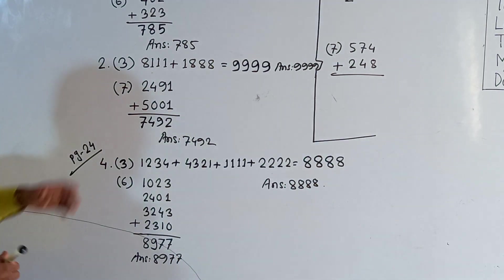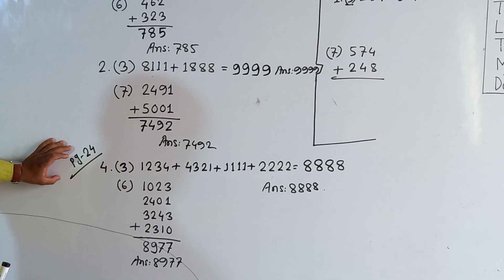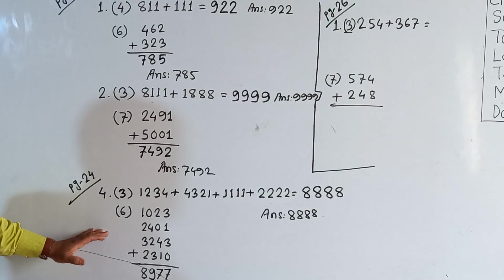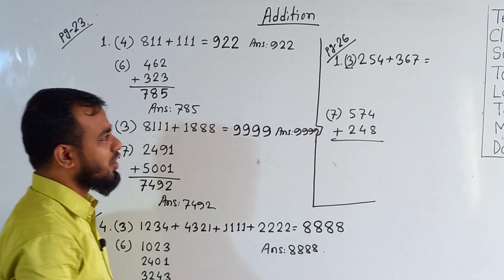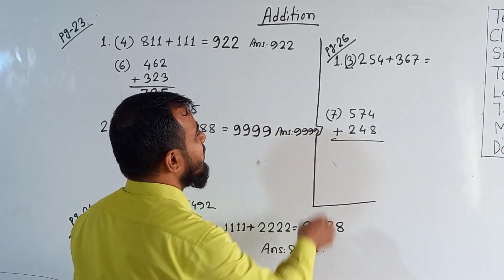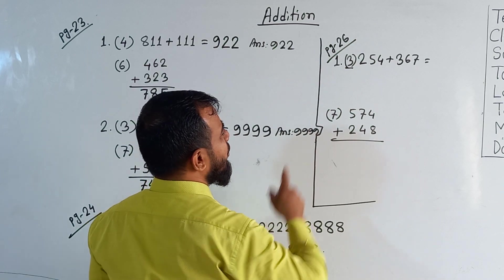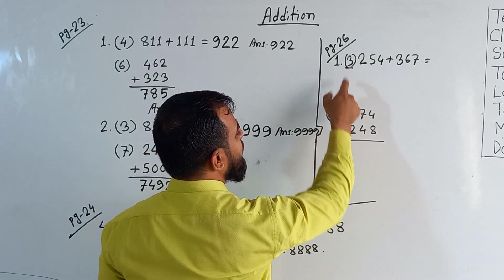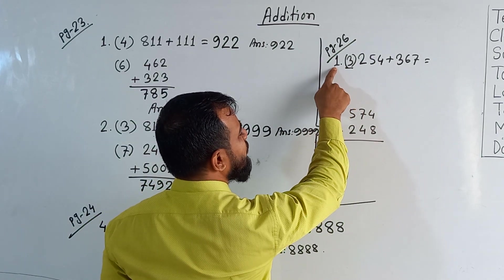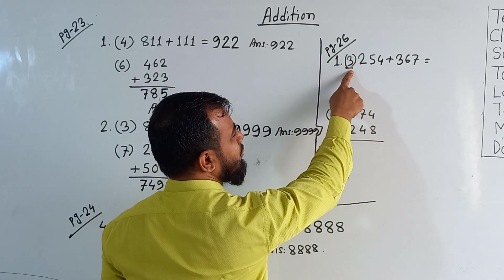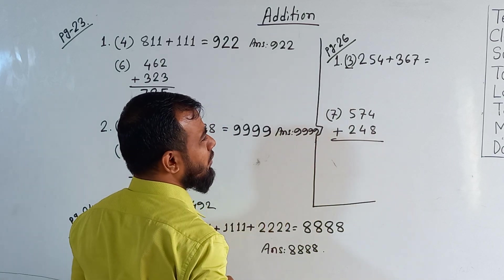We have done page number 23 and 24 — these are problems without carrying. Now we are going to solve with carrying. This is page number 26. We need to solve only 2 problems today: question number 1, sub-question number 3 and 7.